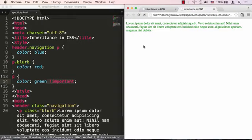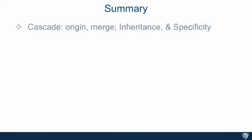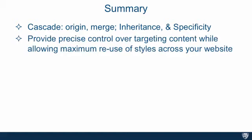In summary, in this lecture we spoke about the cascading algorithm, the origin, the origin precedence, how the declarations merge, as well as inheritance and specificity. The cascading algorithm provides pretty precise control over targeting content while allowing you maximum reuse of styles across your website, and that is basically what makes CSS so powerful. Next we're going to talk about styling text.